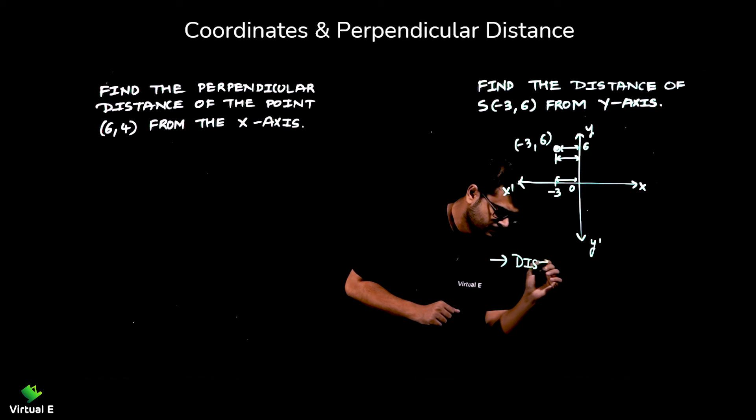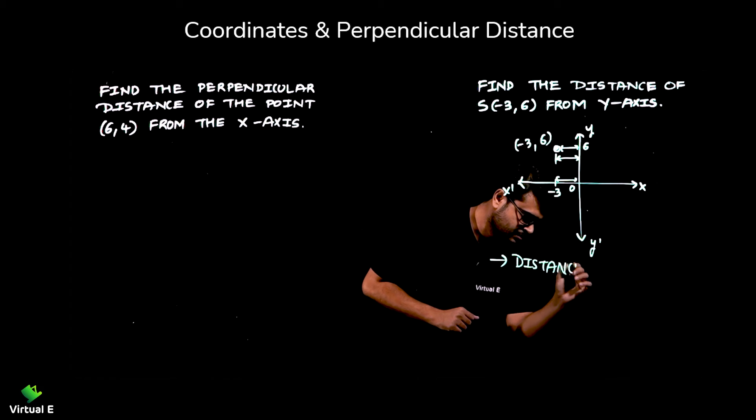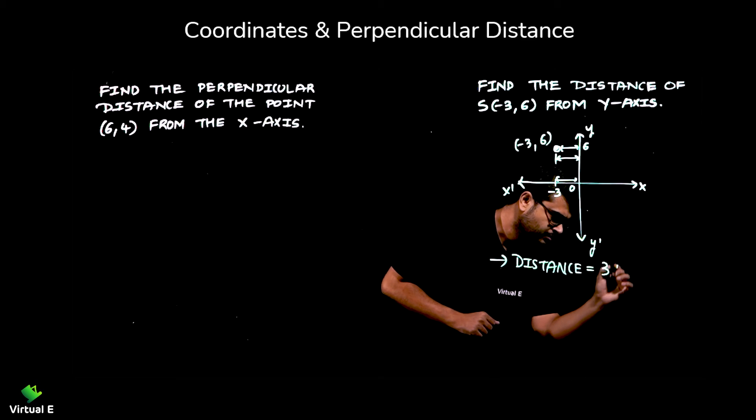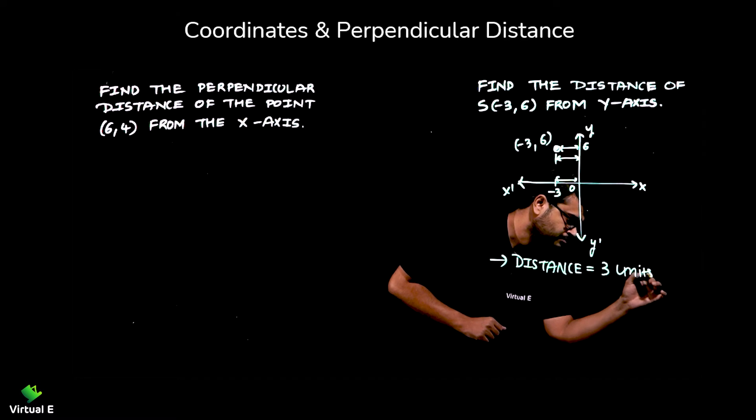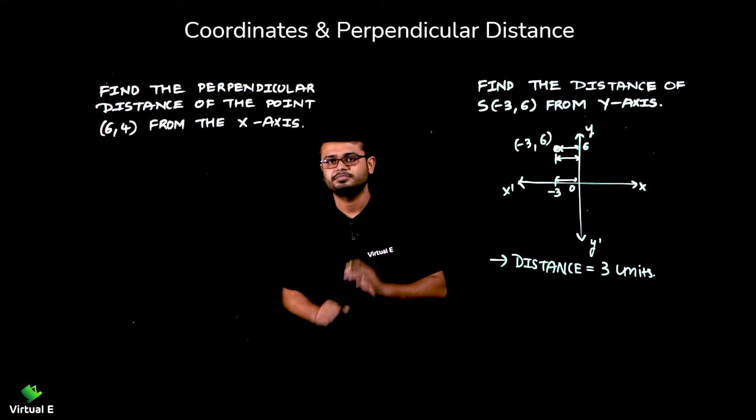So distance, distance is equal to 3 units. Simple. Done.